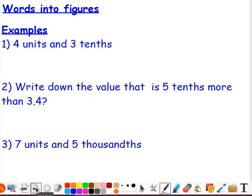And then finally, to finish off, we're going to look at words into figures. So again, we've got some examples here where we've been given the values in words, and we need to convert them into figures. So four units and three tenths. Well, we know our units come before the decimal point, so it's four units, decimal point, and then our tenths column is the first digit after the decimal point. So it's 4.3. Four units and three tenths.